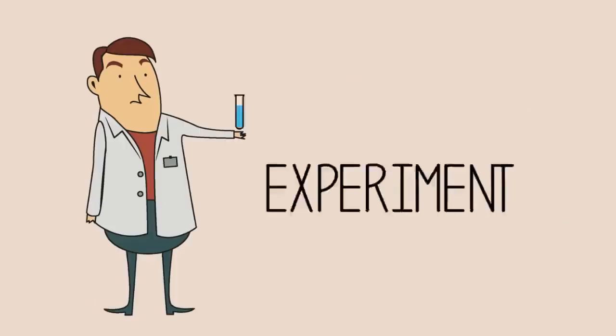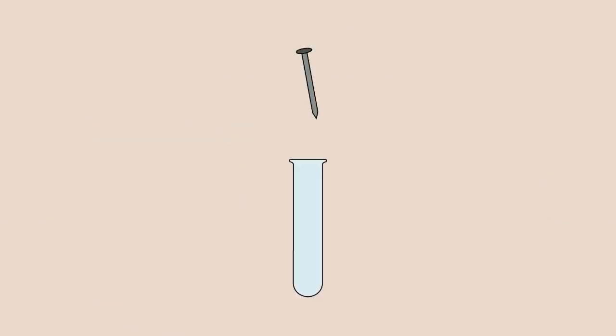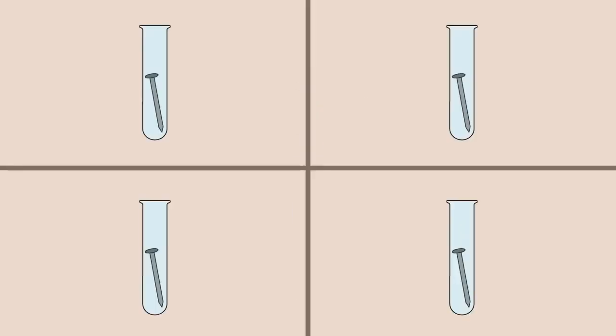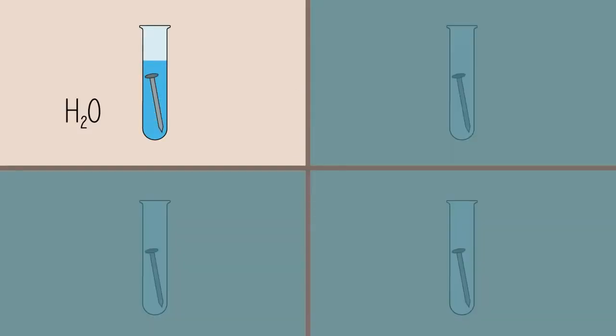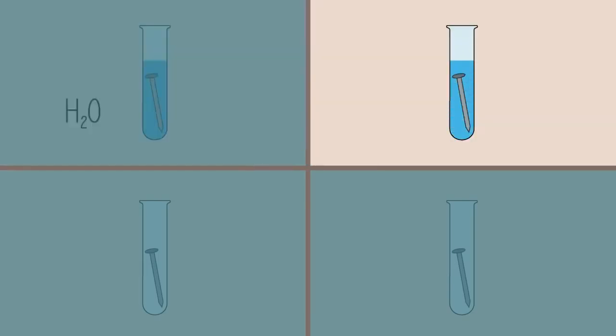We can demonstrate this using a simple experiment. Place an iron nail in four test tubes. Fill one with regular tap water until the nail is submerged. Fill another with regular tap water and add half a spoonful of sodium chloride, regular table salt. Shake from side to side to ensure that sodium chloride fully dissolves.